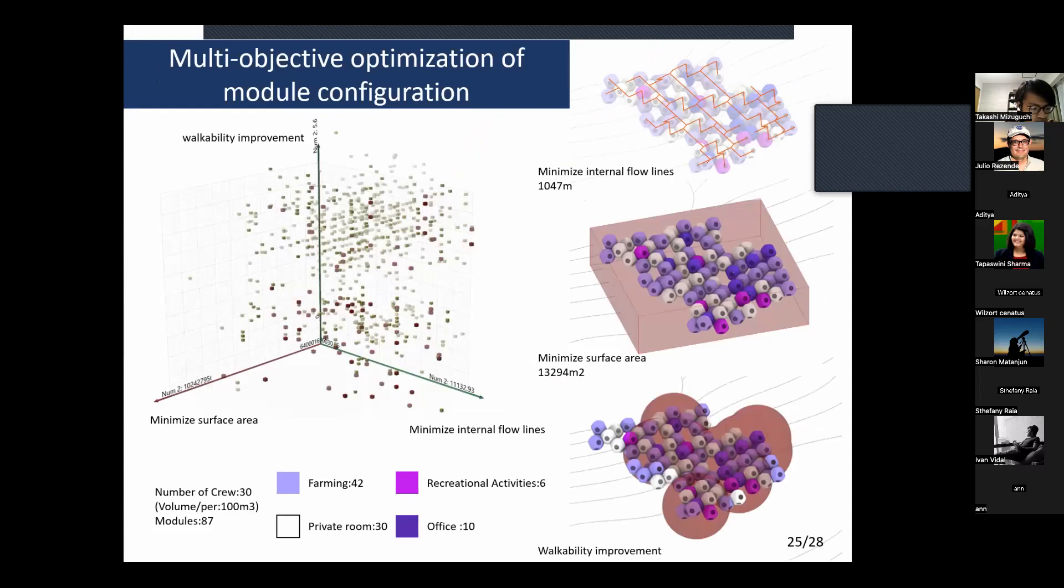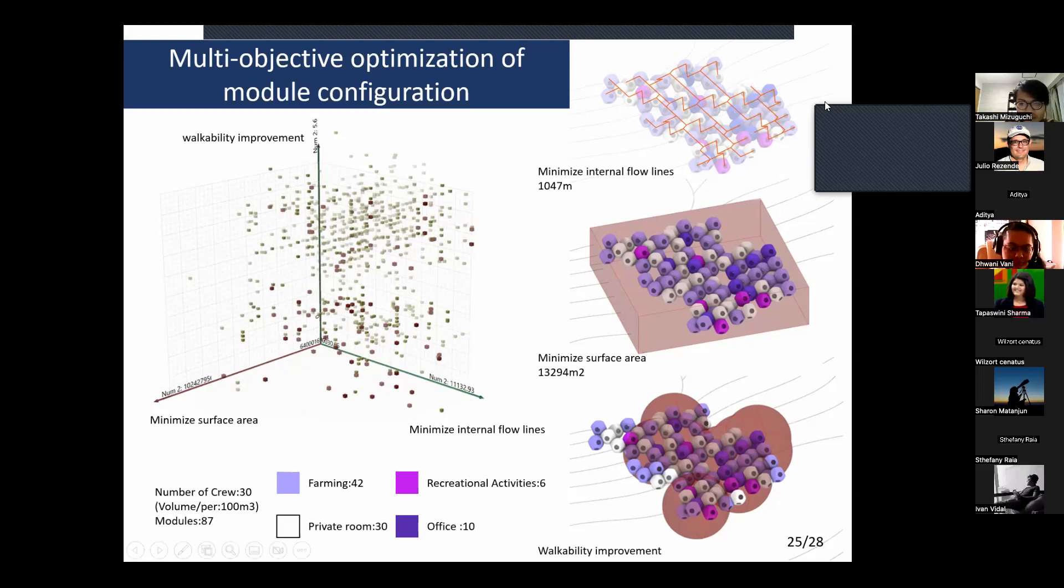Modular coordination is optimized under three conditions: minimizing internal floor line, minimizing surface area, and improving internal mobility. For habitability improvements, room uses are divided into four functions: farm, private room, recreation, and office. The number and volume of modules are calculated, modeled, and optimized to ensure crew comfort during the 180-day period. It can create loops and have the extensibility of branch, loop, and branch configurations.